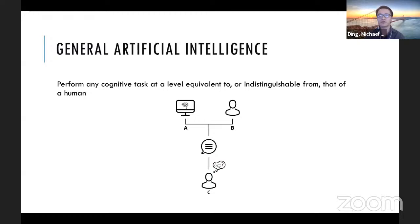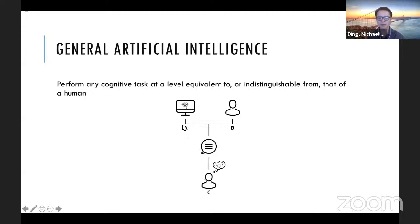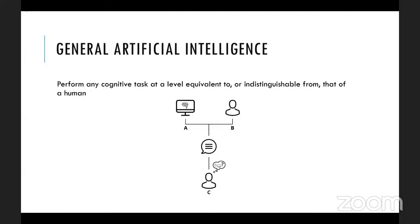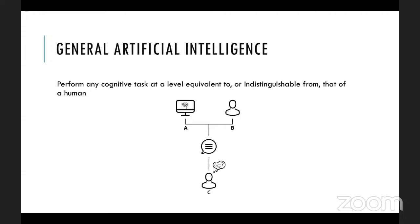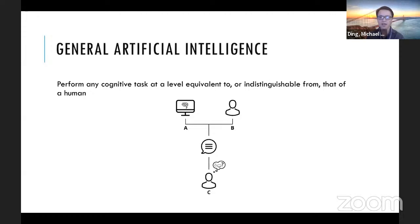A baseline requirement for general AI is that it should perform at the level of a human in all cognitive tasks. You've probably heard of the Turing test: an investigator asks questions to entities A and B — one a computer, one a human — without knowing which is which, and tries to determine which is the computer. The computer passes if it fools the investigator. For truly advanced general AI we'd expect it to surpass human performance, but we'd want to match humans first. Achieving this requires four components.